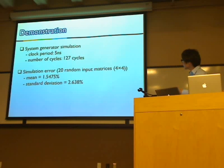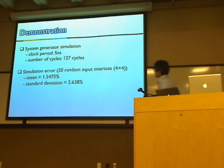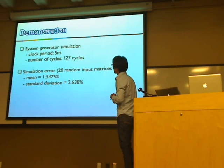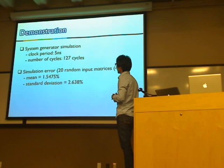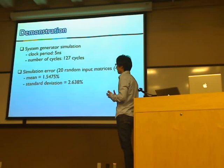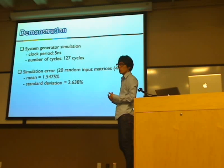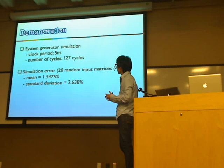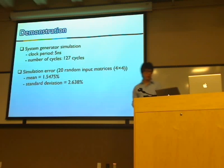I'm going to demonstrate our system. After exploring the system-level simulation, we achieved a 5 nanosecond clock period, which corresponds to 200 megahertz — higher than our target speed of 100 to 150 megahertz. The total number of cycles to complete the computation is 127 cycles. Let me now show you the system block.